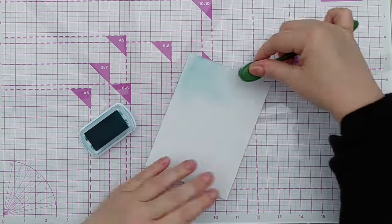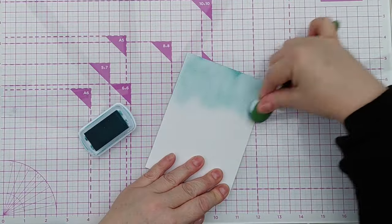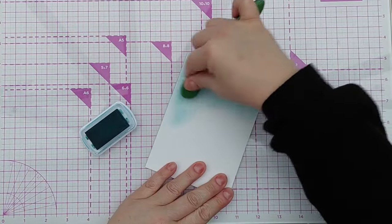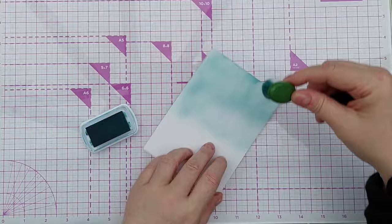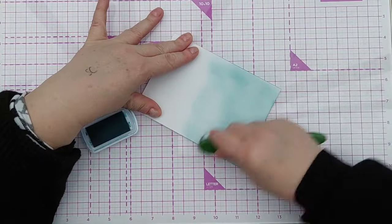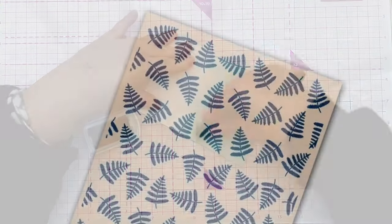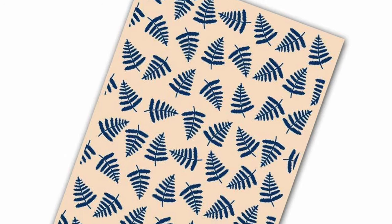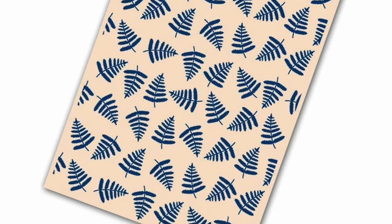To begin the process I blended two green inks onto a piece of mixed media paper. I picked green because the embossing folder I'd chosen to work with had a lovely leafy motif and I wanted the card to have a nature theme.